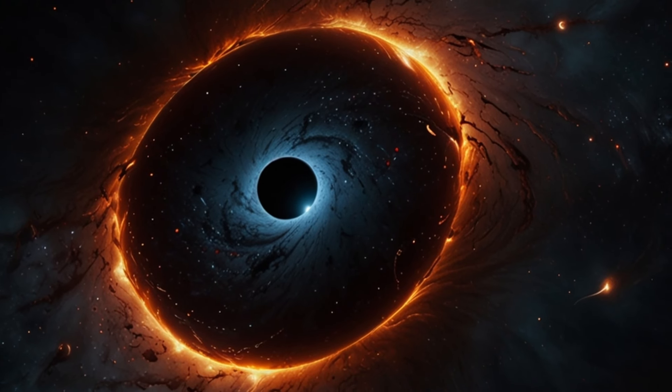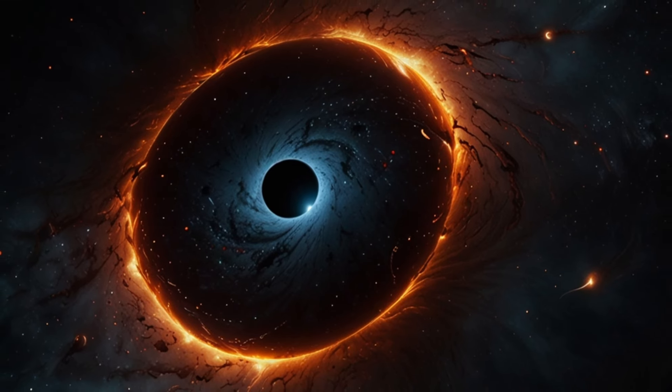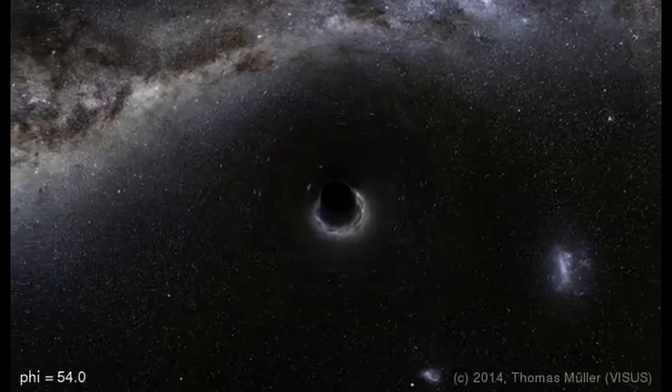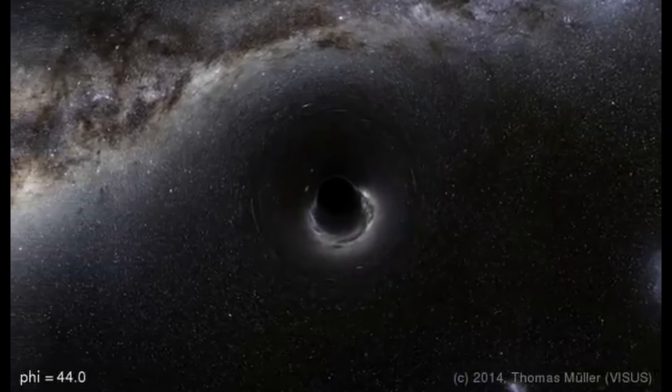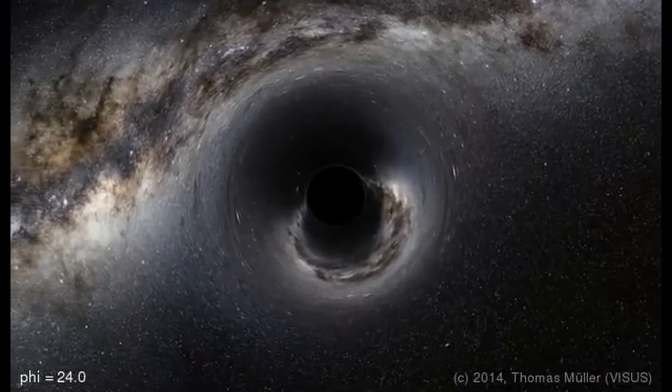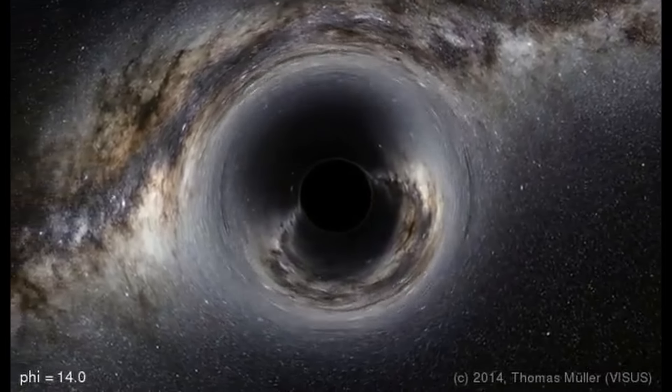When you see the surface of a black hole from far away, it appears to freeze in time due to insane time dilation. Black holes can cause gravitational lensing, where light from background stars is bent around them, thanks to its warping and twisting of space.